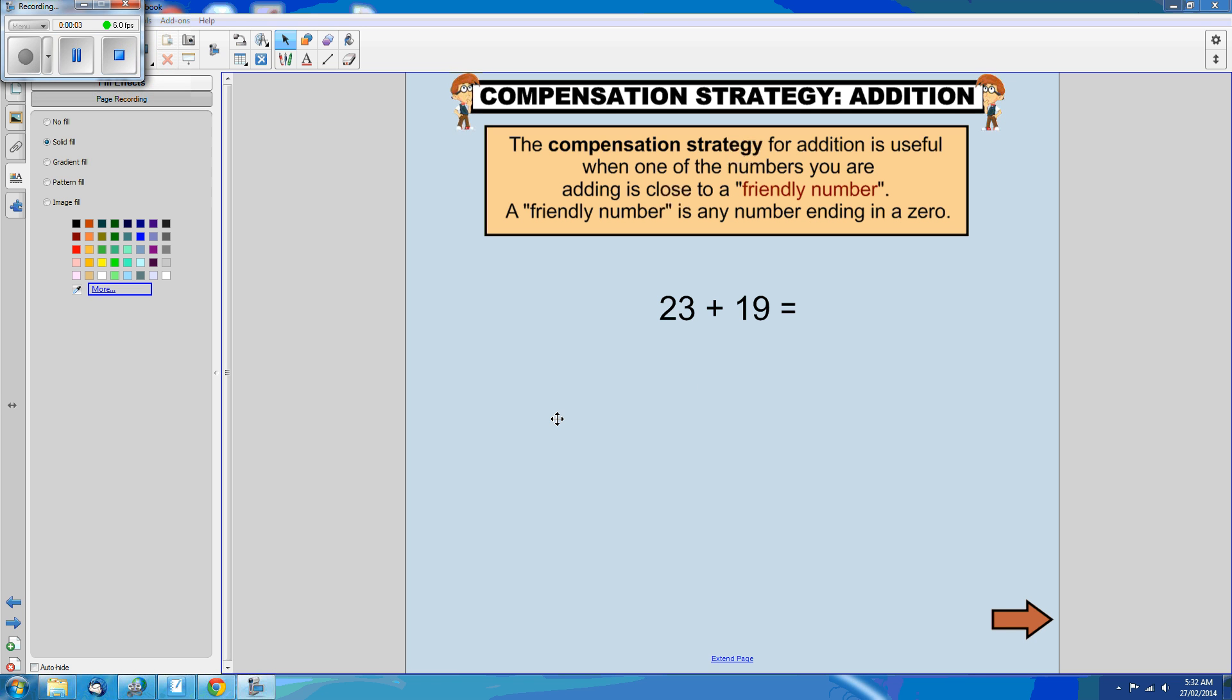Let's see how we can do 23 plus 19 using the compensation strategy and a number line to demonstrate. So 19 is very close to a friendly number, isn't it? That's right, it's close to 20.